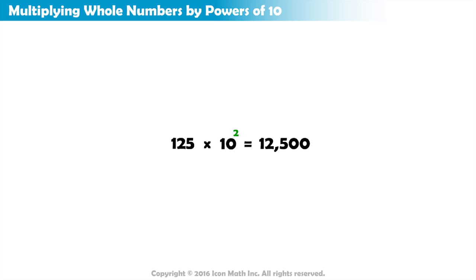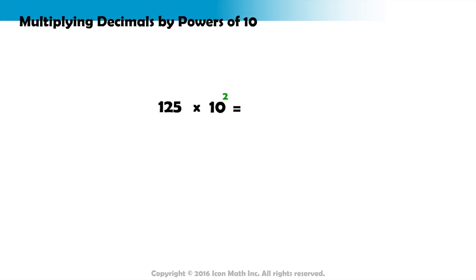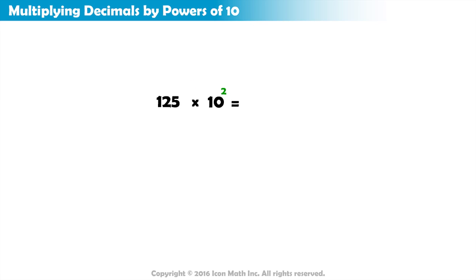But, what if we want to multiply a number that has both a whole number part and a decimal part? For example, what is the result of multiplying 1 and 25 hundredths by 10 to the power 1?